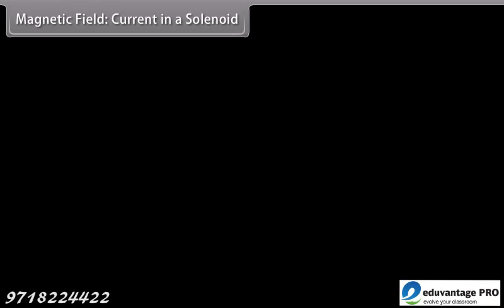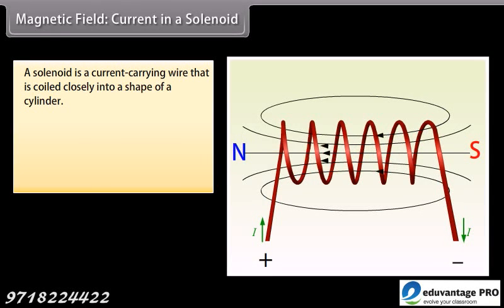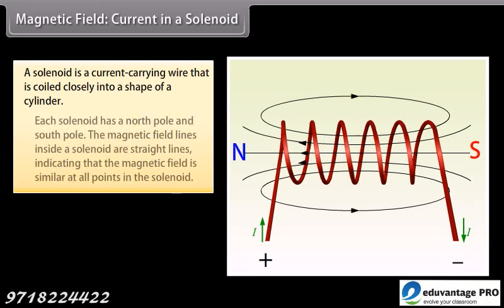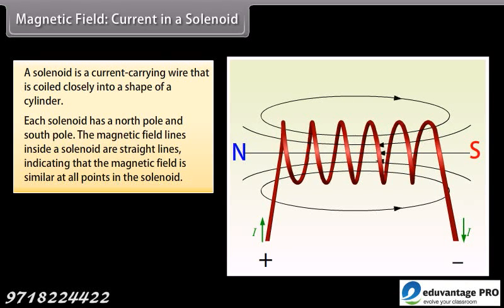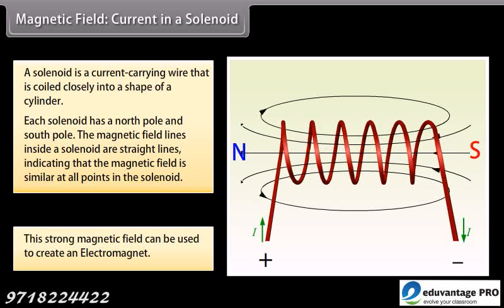Magnetic field current in a solenoid. A solenoid is a current carrying wire that is coiled closely into a shape of a cylinder with the turns as close together as possible. This is similar to a bar magnet. Each solenoid has a north pole and south pole. The magnetic field lines inside a solenoid are straight lines and indicate that the magnetic field is similar at all points in the solenoid. This strong magnetic field in the solenoid can be used to magnetize magnetic materials. This type of a magnet is called an electromagnet.